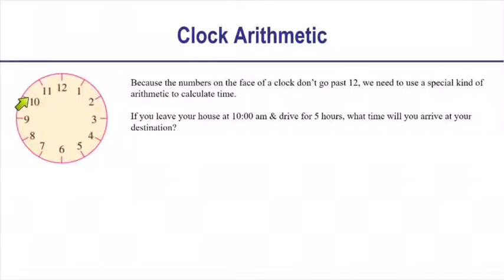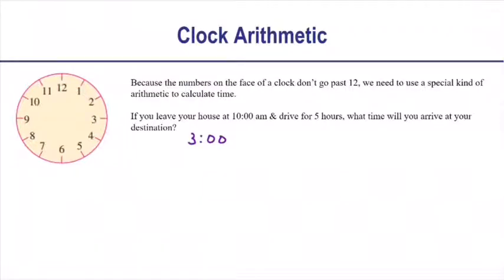You start at 10 and you add 5 hours — so 10 plus 1, 2, 3, 4, 5 — we started at 10 and added 5 hours and end up at 3 o'clock. Now of course it's 3 p.m. because we started at 10 a.m. and went 5 hours, but if you're just looking at the clock, a.m. and p.m. don't show up. So throughout this section, all we're concerned about is the position of the hand, not a.m. or p.m., unless the question specifically asks.